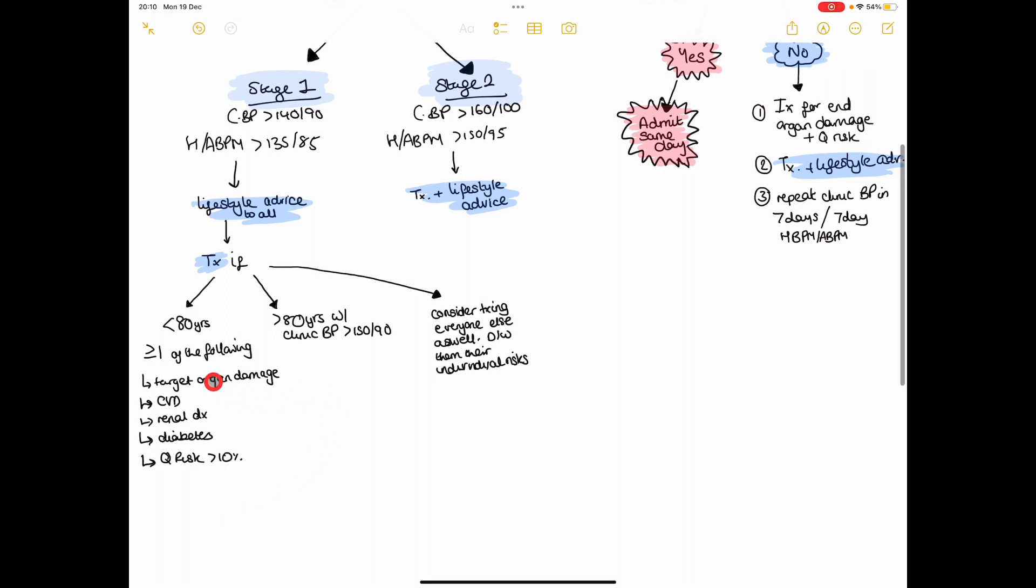Is there a lot going on? So if they're less than 80 and they have any one of the following or more than one of the following, then we will highly encourage and try to get the patient on some antihypertensive medication.